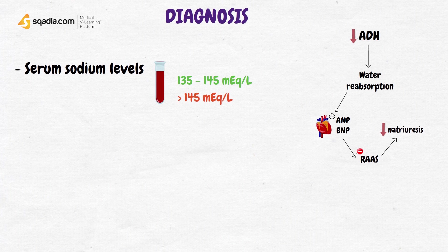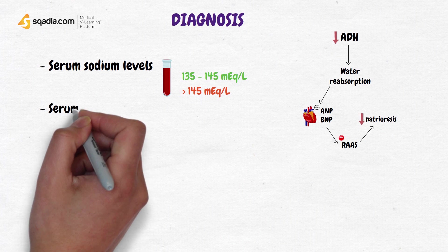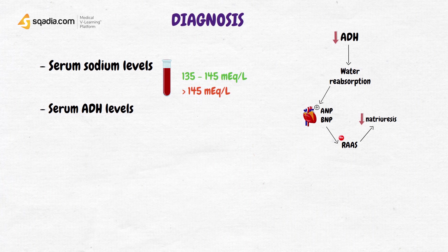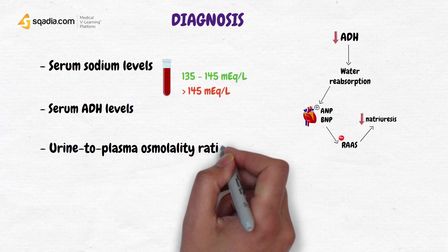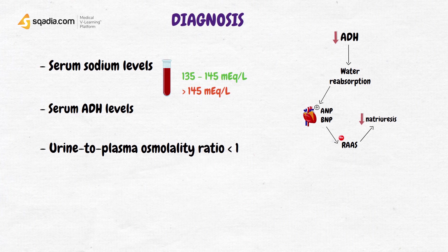So back to diagnosis, we can also measure serum ADH levels. We can also measure osmolality of both urine and plasma. The plasma osmolality should show up higher than urine owing to the high sodium, and so the urine to plasma ratio of osmolality should be less than 1.